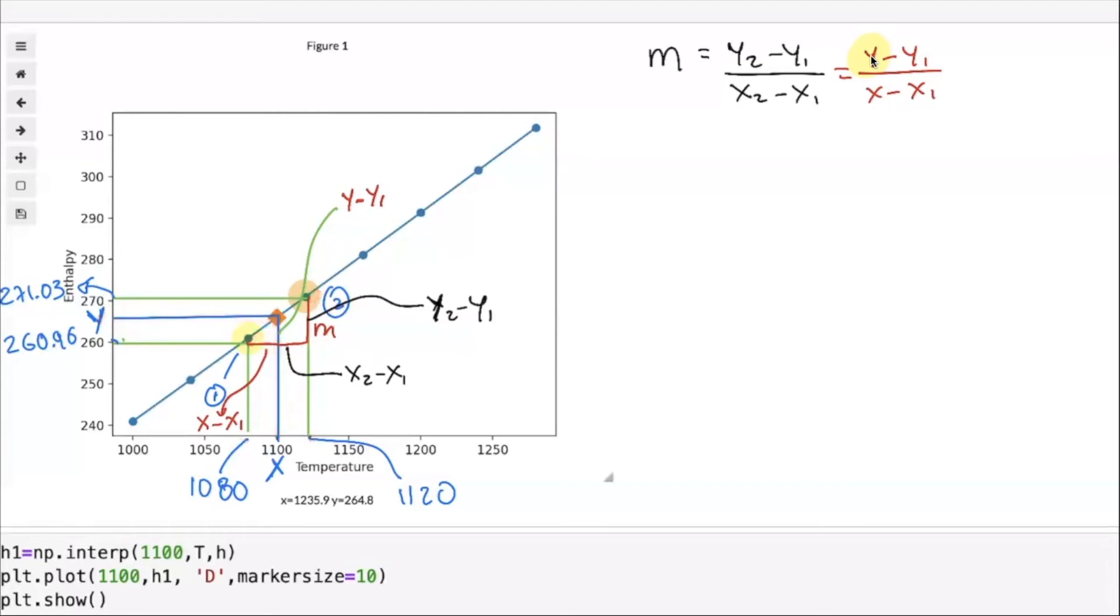Solving for y we have that y is equal to the left hand side multiplied by (x minus x1), so that's m multiplied by (x minus x1), and then I have to move y1 to the other side, so that's plus y1.